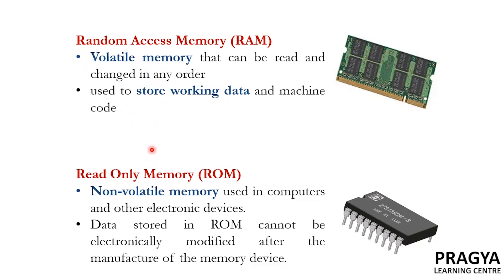Volatile memory means a type of memory which maintains the data only when the device is powered. For example, if we have opened a number of tabs in our web browser and we are working on it, and suddenly we switch off the computer without saving anything, we will lose our data. This is because all the working data, unless saved, will be stored in RAM. And since RAM is a volatile memory, once the device is switched off, we lose the information stored in RAM.